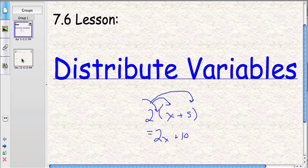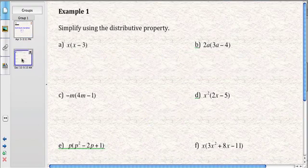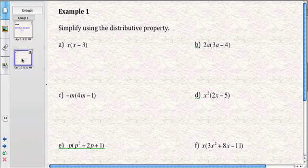What we're going to do now is learn how to distribute variables. Distributing variables, it just means we're going to do the exact same thing. We're going to use the distributive property, except there's going to be a lot more letters in our question. We learned the other day that x times x is x squared. So we're still going to imagine that we're multiplying by what is outside the brackets. This time it's an x, though.